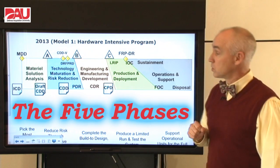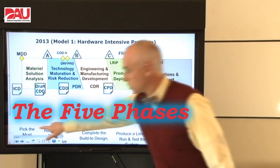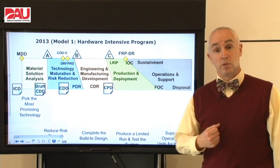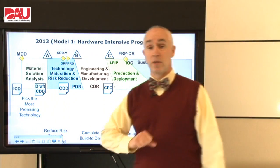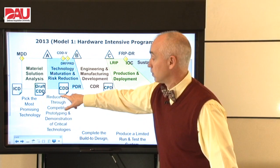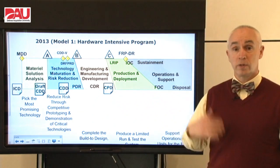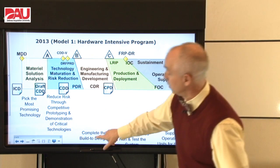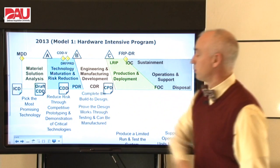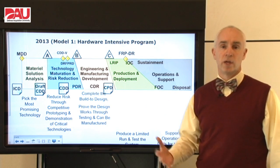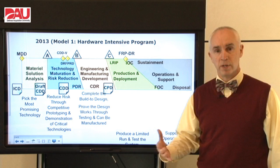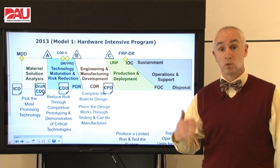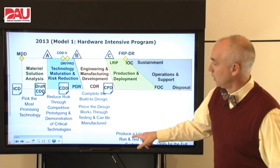These are the five phases. We start with Material Solution Analysis, which means we're picking the most promising technology to meet the user need expressed in the initial capabilities document. Then, in Technology Maturation and Risk Reduction, we're going to reduce risk by proving that technology through competitive prototyping, making sure that it works. Then, in Engineering and Manufacturing Development, we're going to complete the build-to design — the one that we're actually going to field — and build a few of those to prove that the design works and that we can actually produce it.